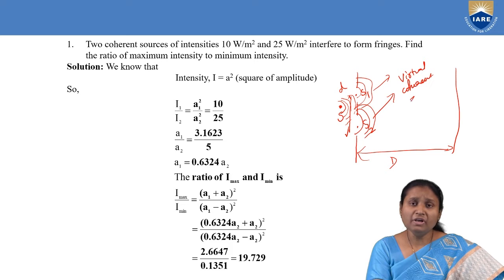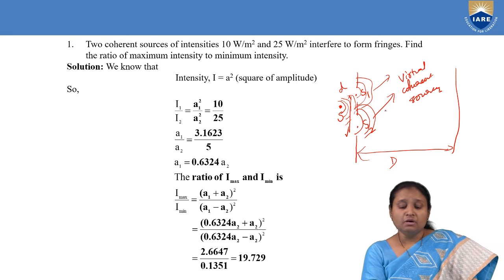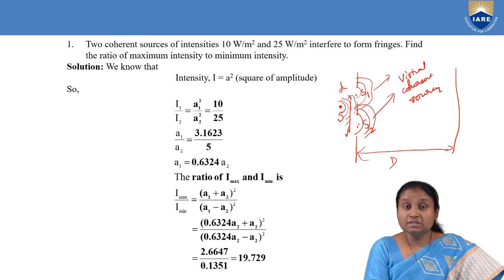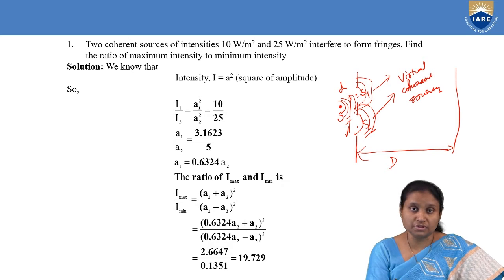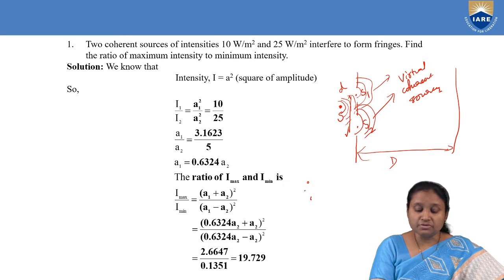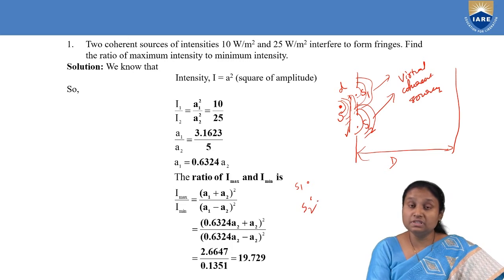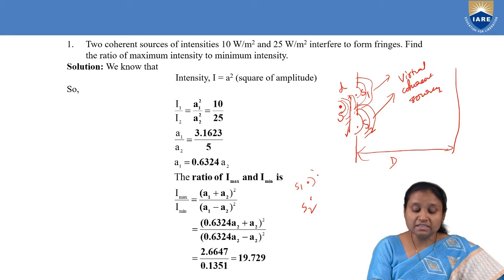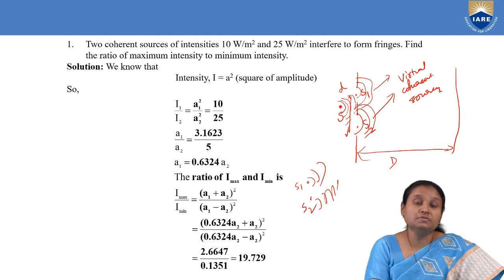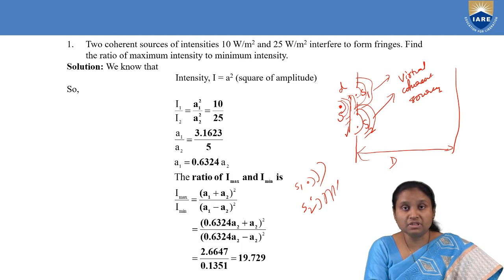Why are they called virtual coherent sources? Because whatever wavefronts we are getting from S1 and S2, they are coming from the same source, and we know that wavefronts coming from a single source can only be in phase with each other, or they can be coherent. Whereas if we take two different sources S1 and S2, these are different actual sources, and if we consider wavefronts coming from these two sources, these two wavefronts coming from two different normal sources can never be in phase with each other.